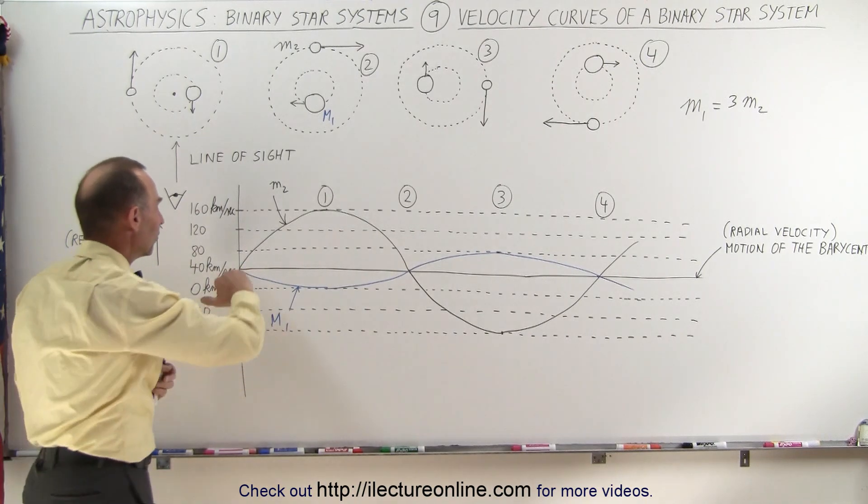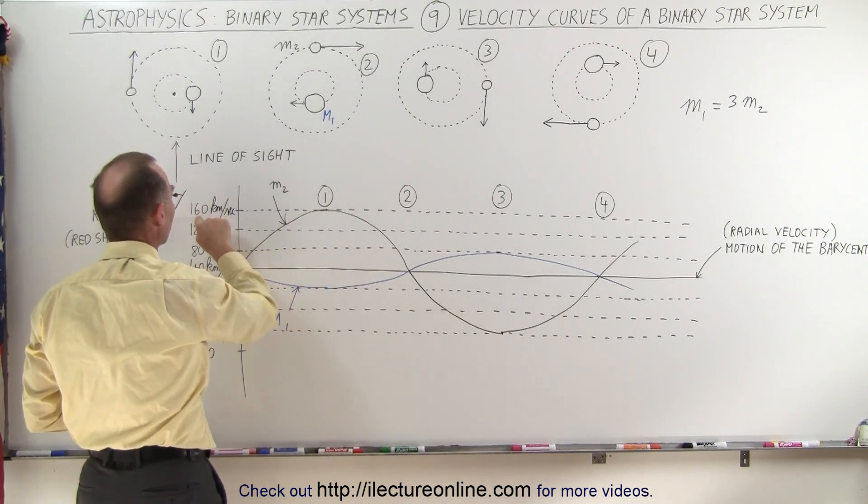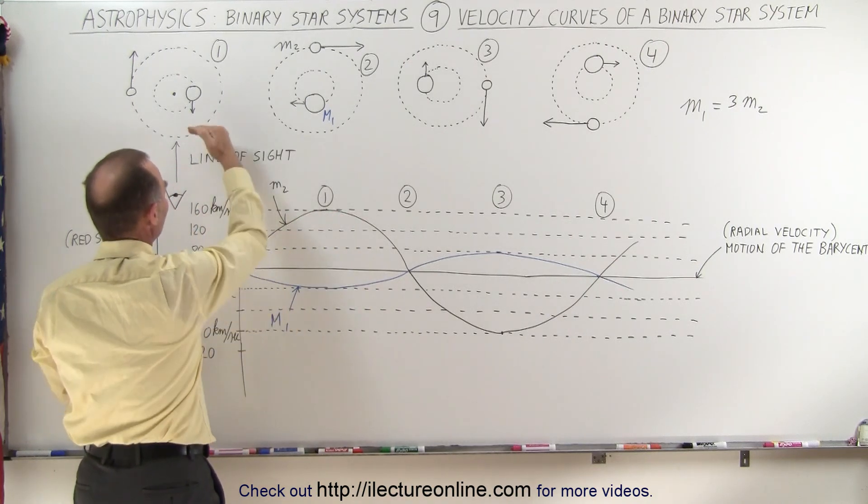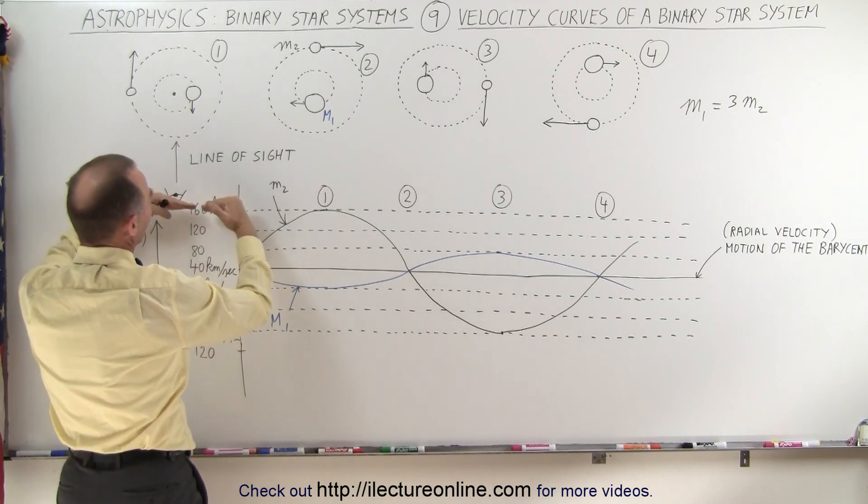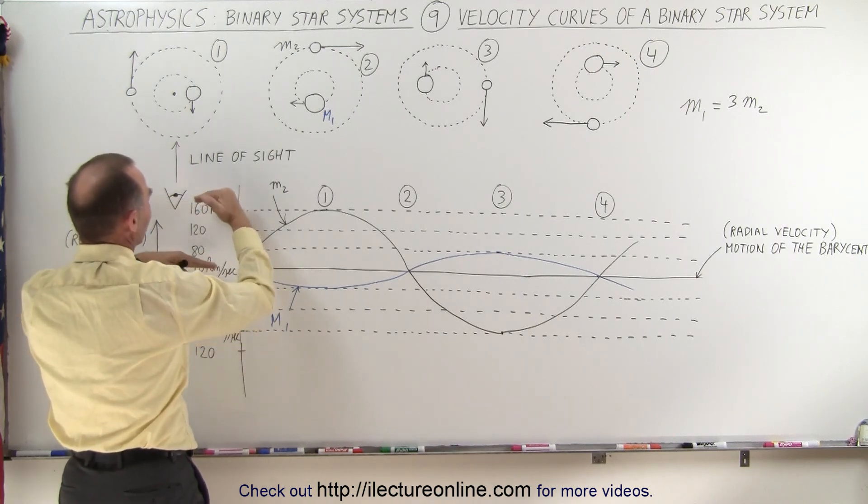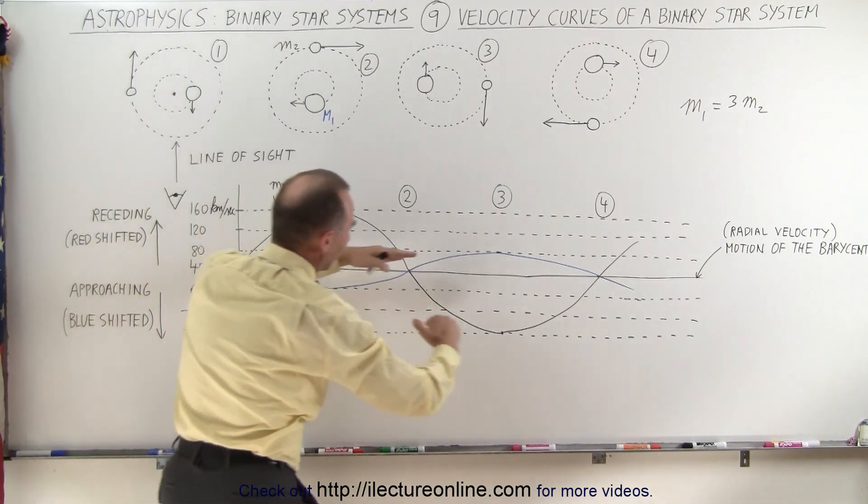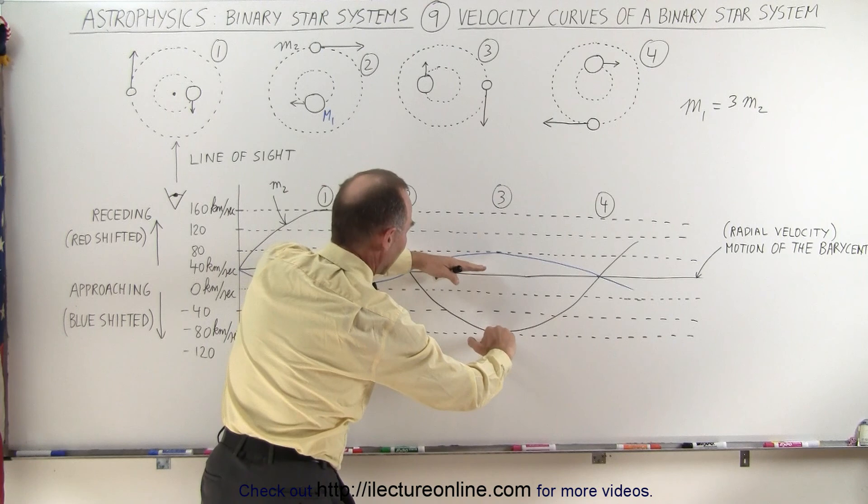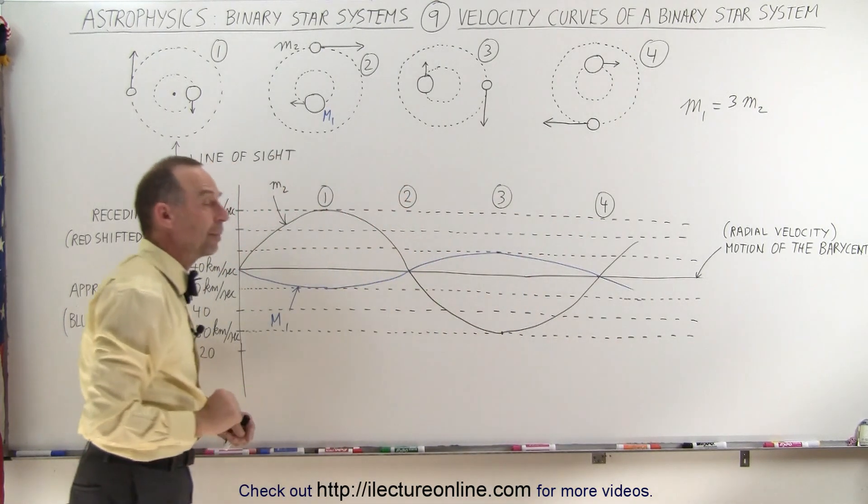On top of that, we can see that sometimes the smaller object moves as much as 160 kilometers per second away from us, so the difference between the velocity of the barycenter and the velocity of the smaller object is 120 kilometers per second in this direction, and 120 kilometers per second in this direction, so you can see that's superimposed on the velocity of the barycenter.